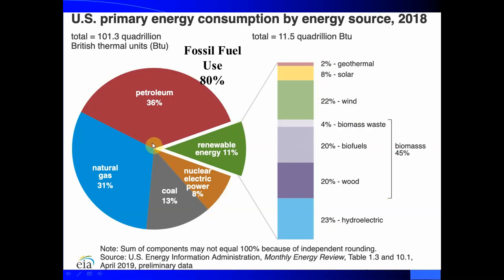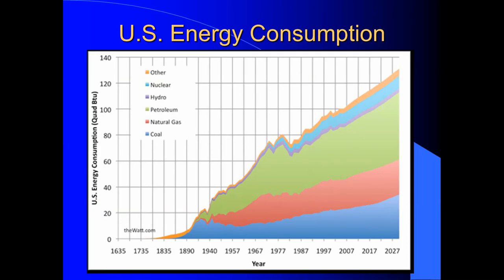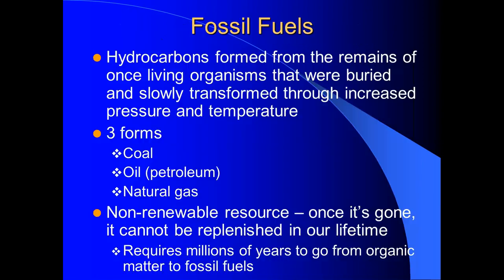That 19% from renewables and nuclear will be the second half of our discussion. This first half, we're going to look at our three fossil fuels. If you look at energy consumption through time, going back to the Industrial Revolution, fossil fuels have always made up a fairly large percentage — blue being coal, red being natural gas, and green being oil. We have always been highly dependent on fossil fuels, with 80% of our energy coming from coal, oil, and natural gas as of 2018.